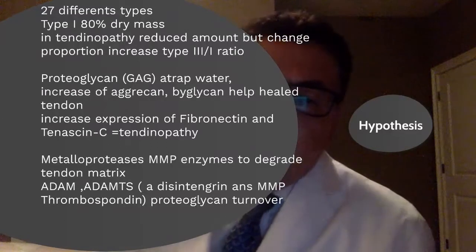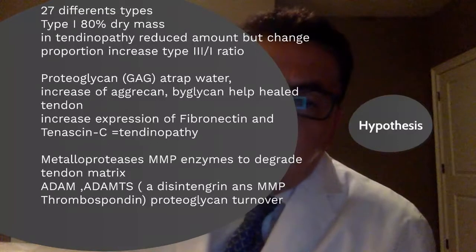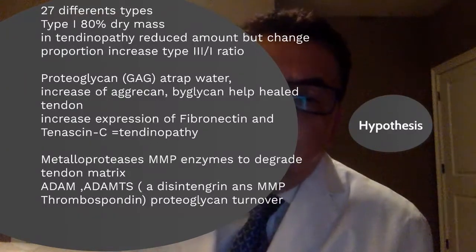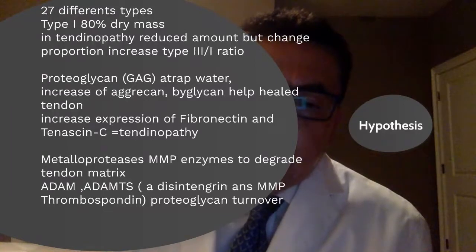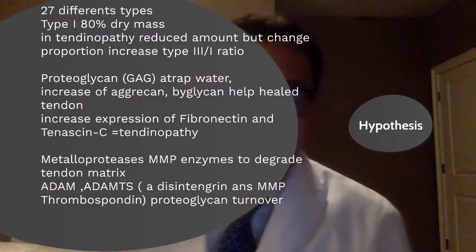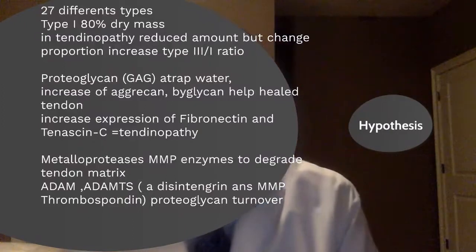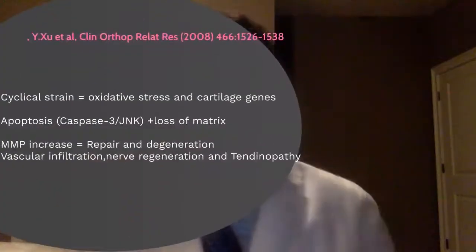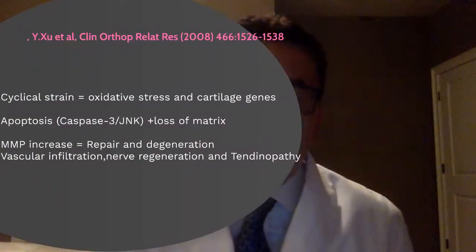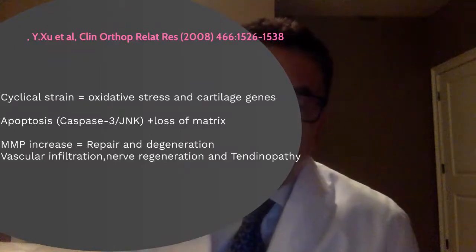There are 25 different collagens; type one is the most predominant. In tendinopathy, the ratio between type three and type one chains changes. Proteoglycans function to retain water and provide cushioning under compression. There are also enzymes normally involved in regeneration and degradation of the tendon that are increased in tendinopathy.